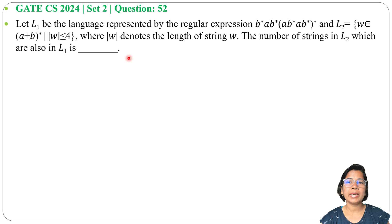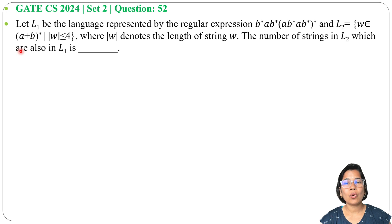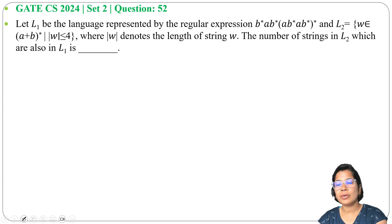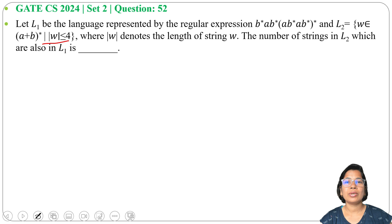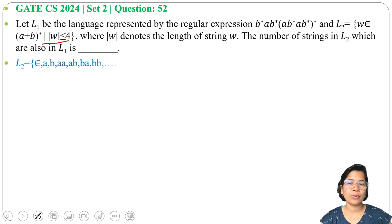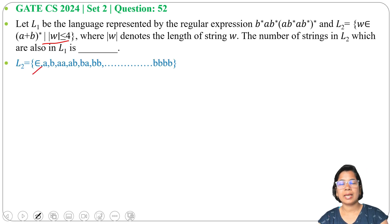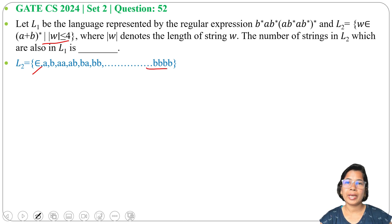It is asking how many strings of L2 are also in L1. For L1, a regular expression is given, and for L2 the language is (A+B) whole Kleene closure with length less than or equal to 4. This means L2 accepts all strings over A and B whose length is at most 4, starting from length 0 up to 4. So the minimum string is epsilon, and the maximum is any string of length 4 such as AAAA, BBBB, ABBA, and so on.